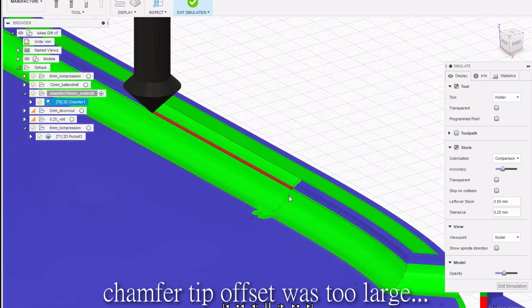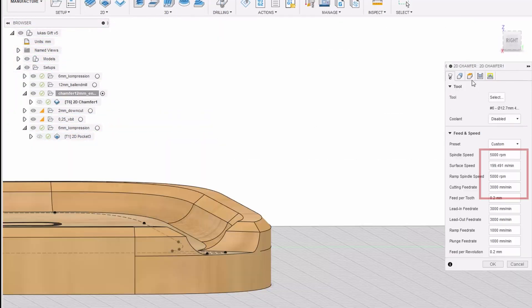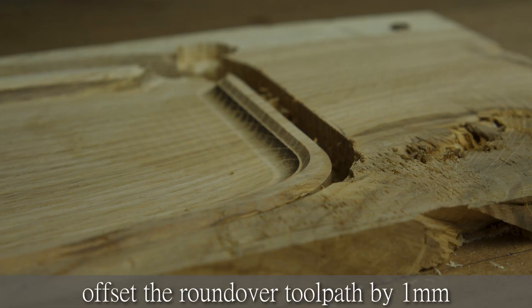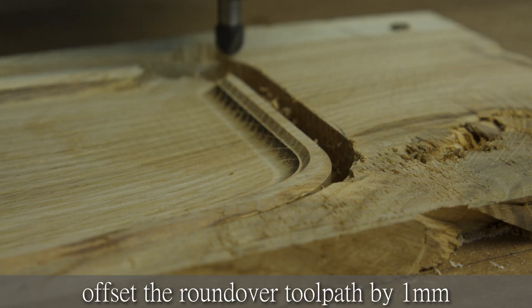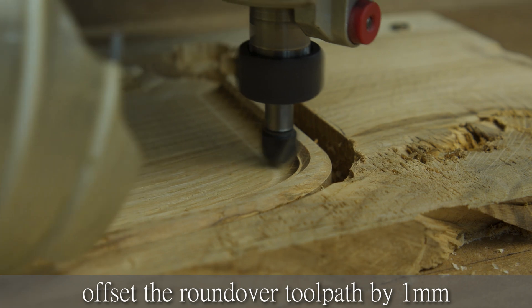On the chamfer toolpath, the chamfer tip offset was too big, and so it cut deeper than it should. To fix this I repeated the round over toolpath with a 1mm offset.